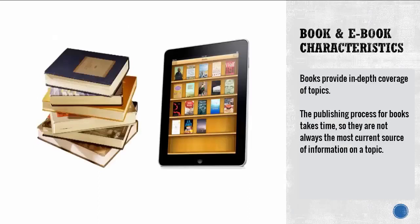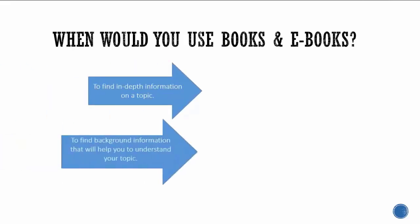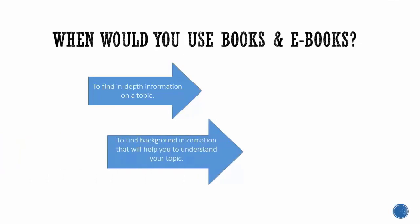Let's start with the characteristics of books and ebooks. Books provide in-depth coverage of topics. The publishing process for books takes time, so they're not always the most current source of information on a topic. Books are best used to find in-depth information on a topic, as well as background information that will help you understand your topic.